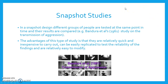Snapshot studies. In a snapshot design, different groups of people are tested at the same point in time, and their results are compared. For example, Bandura et al. in their study on the transmission of aggression used this snapshot design. The advantages of this type of study is that they are relatively quick and inexpensive to carry out, and can be easily replicated to test the reliability of the findings and are relatively easy to modify.